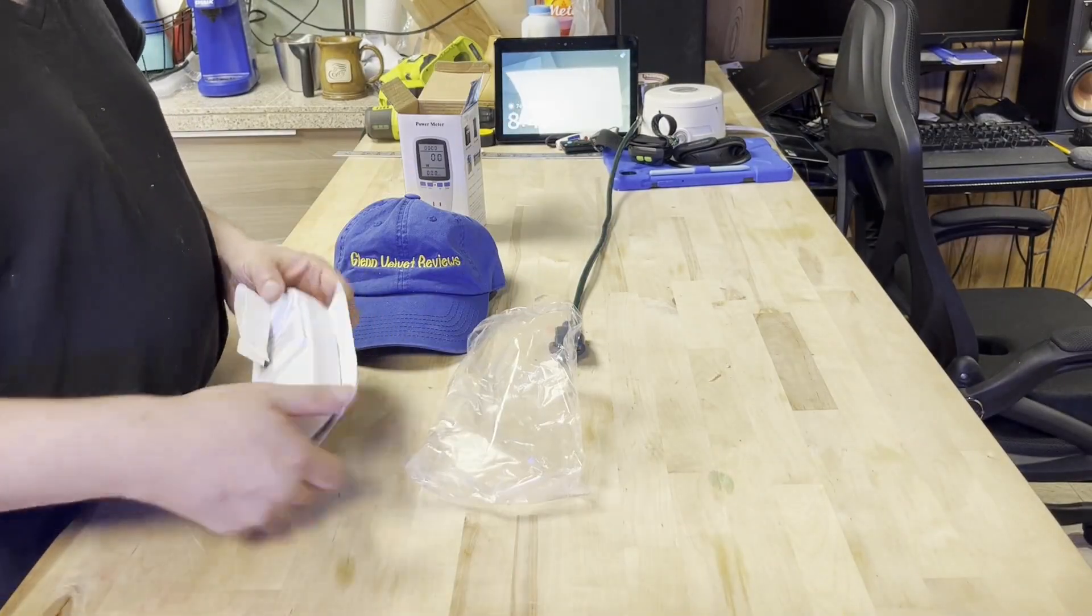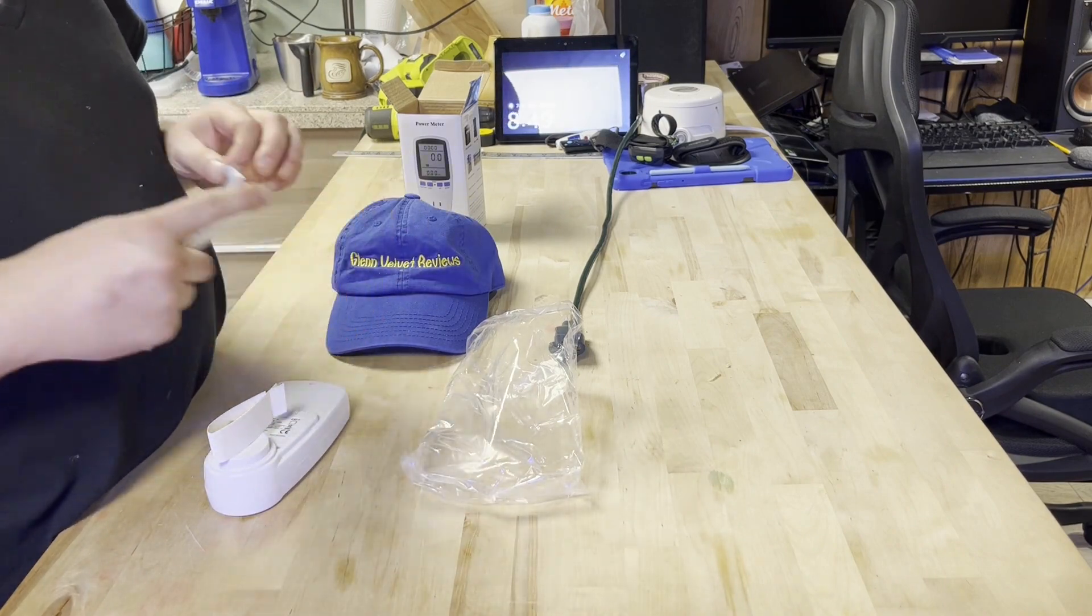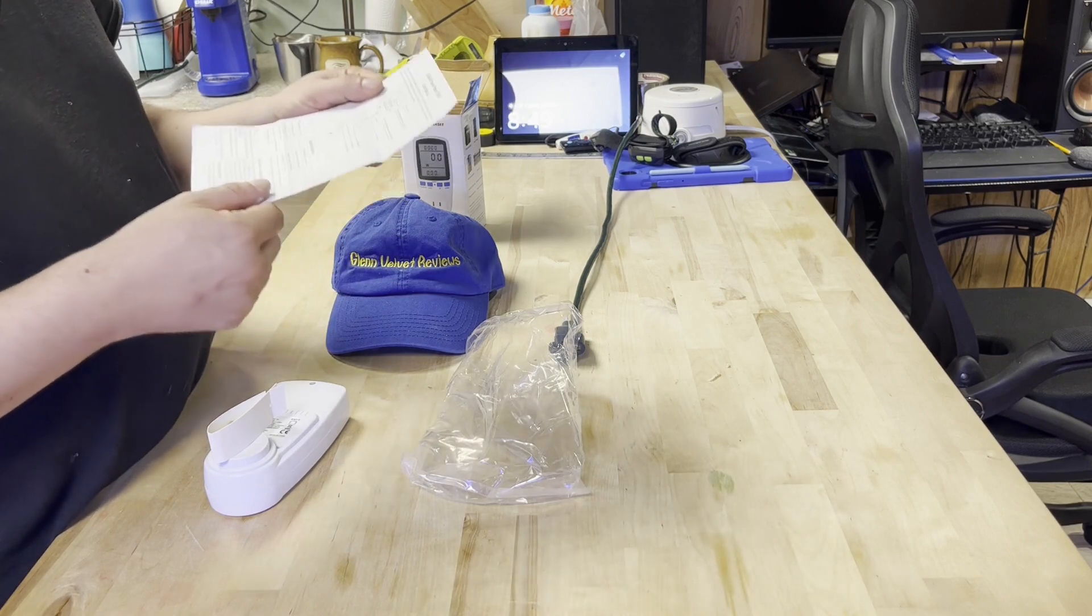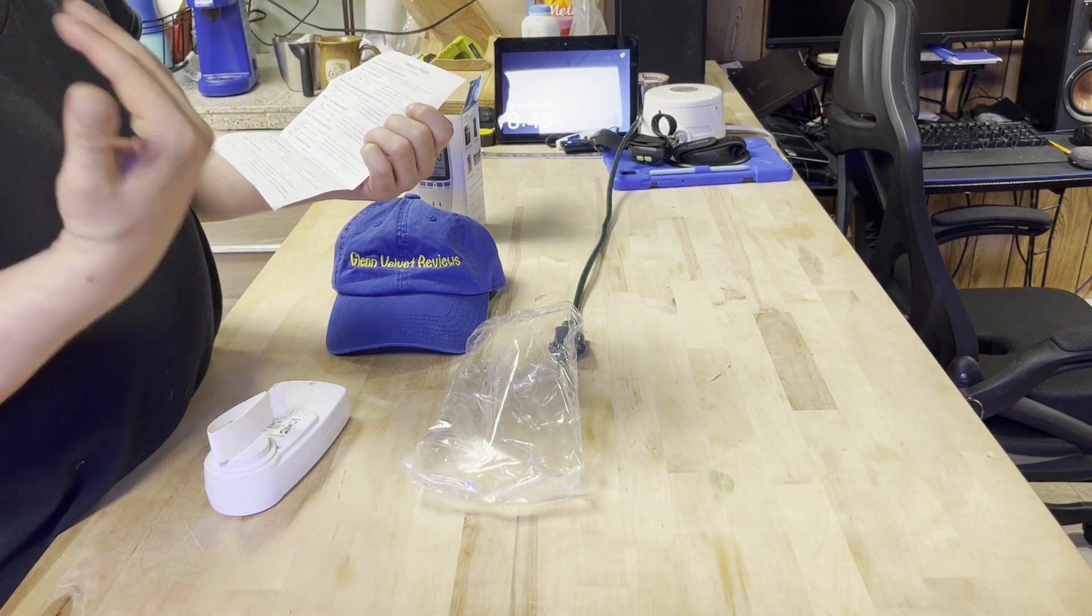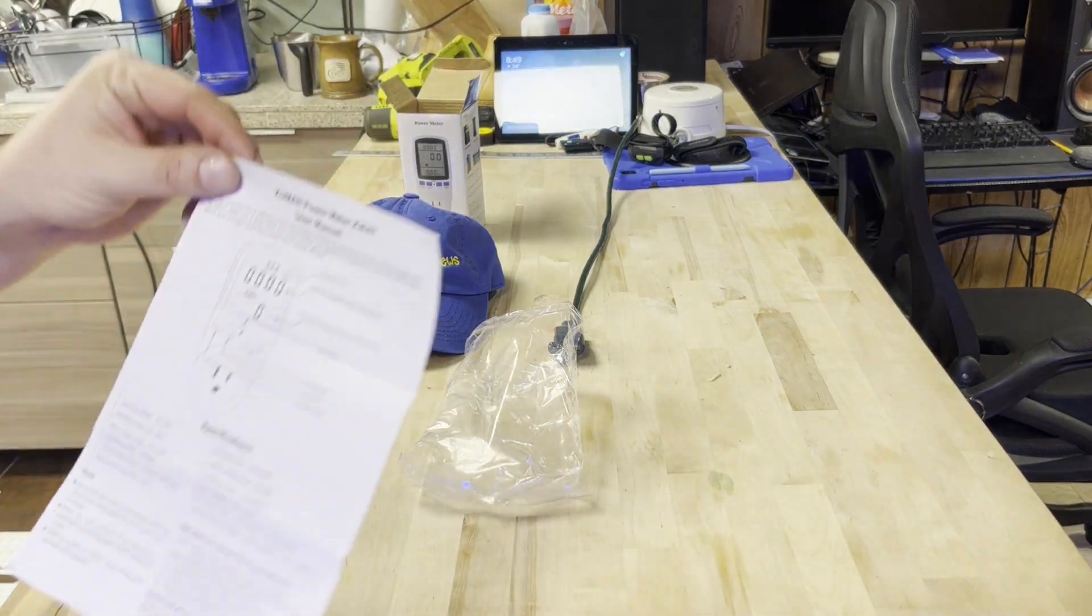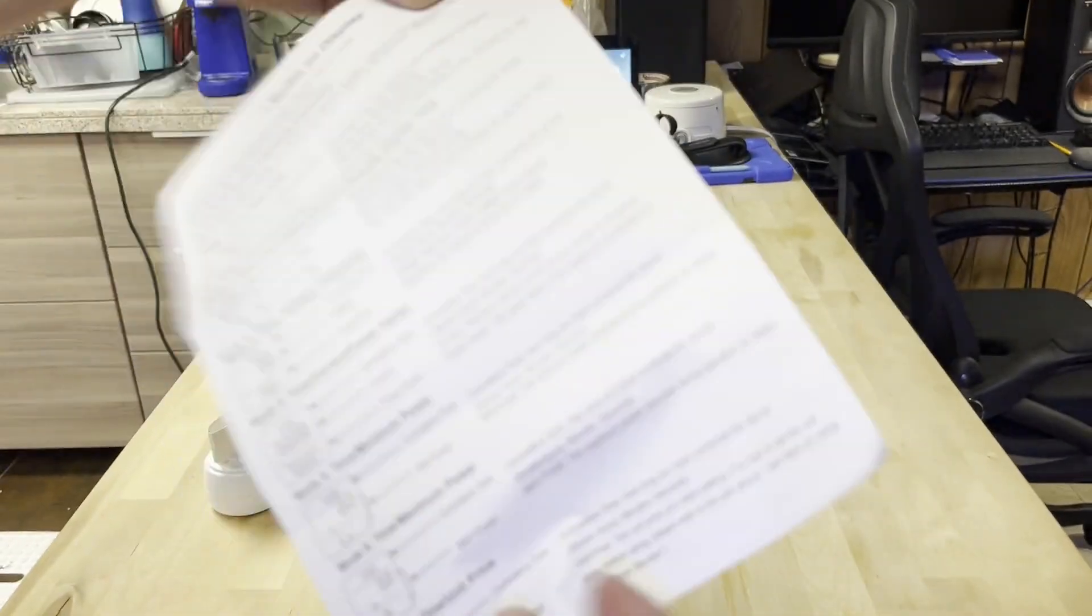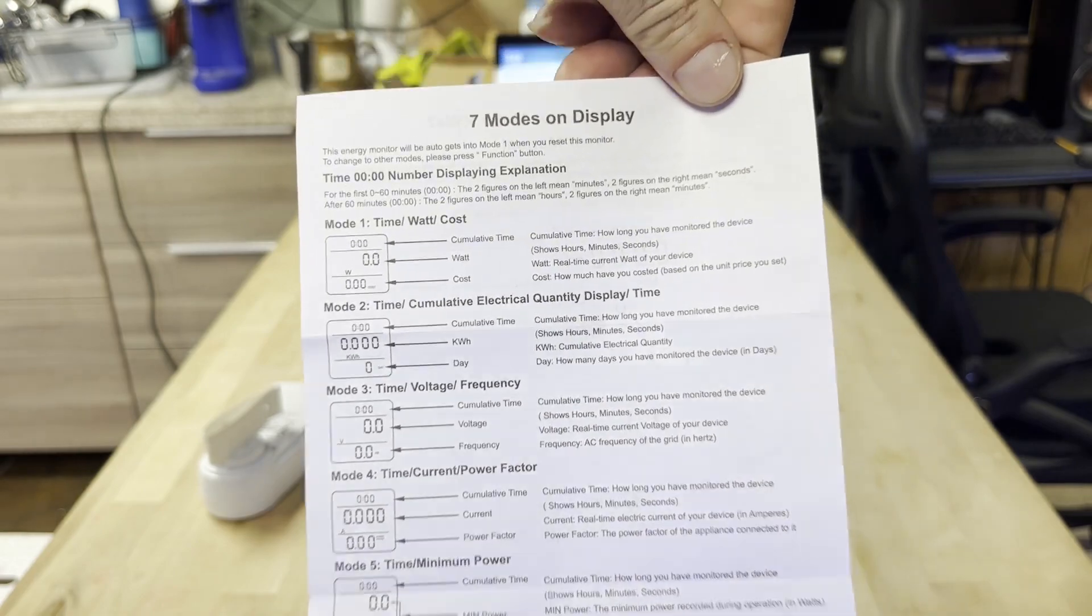Now I'm not sure how to set it, because you're supposed to be able to set the cost of your electric rate in this one and it's supposed to tell you how much it costs to run the appliance. I'm not sure how to do that, I am going to read this and then we're going to come back. This is just the unboxing right now to give you a review of the instructions.